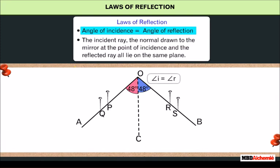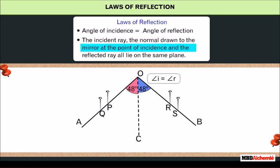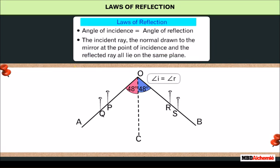Thus, the angle of incidence is equal to the angle of reflection. Also, the incident ray, the normal drawn to the mirror at the point of incidence, and the reflected ray all lie on the same plane. These are the laws of reflection.